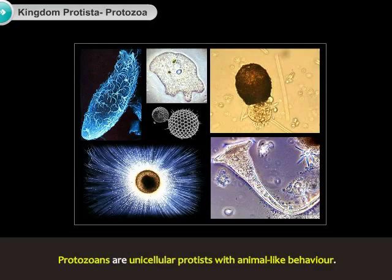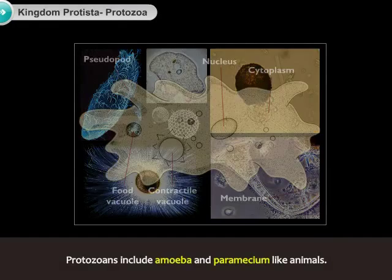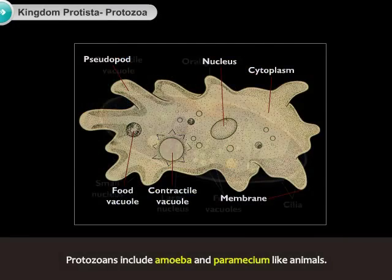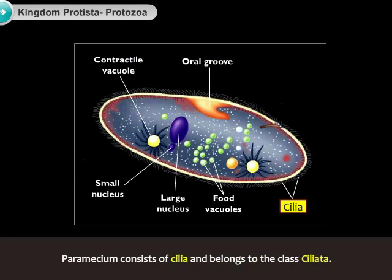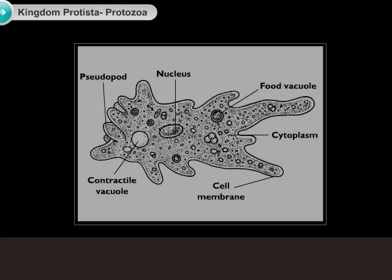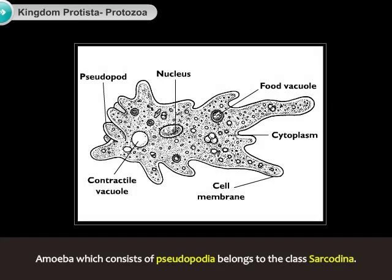Protozoans are unicellular protists with animal-like behavior. Protozoans include amoeba and paramecium-like animals. Paramecium consists of cilia and belongs to the class Ciliata. Amoeba, which consists of pseudopodia, belongs to the class Sarcodina.